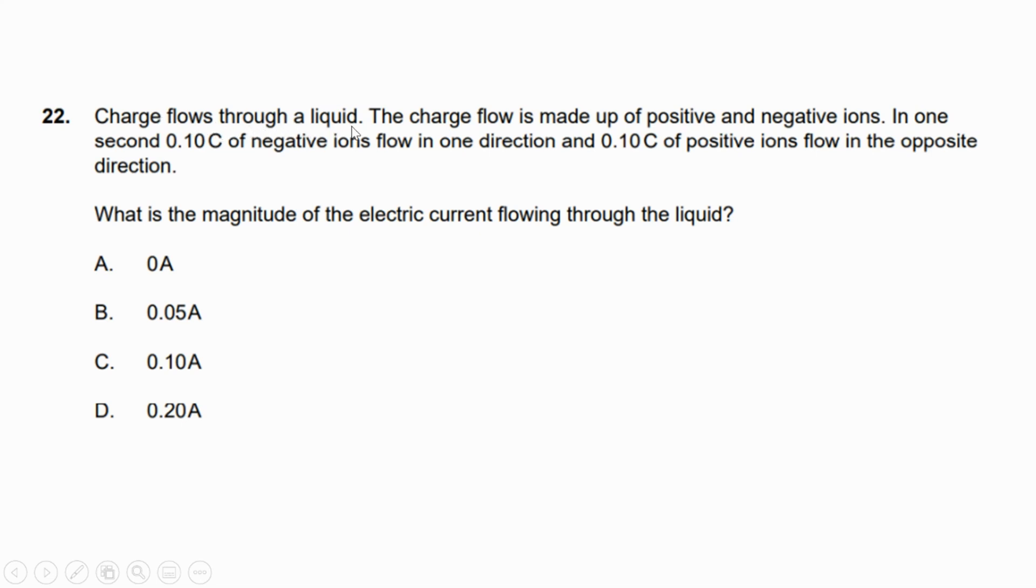Charge flows through a liquid. The charge flow is made up of positive and negative ions. In one second, 0.10 coulombs of negative ions flow in one direction and 0.10 coulombs of positive ions flow in the opposite direction. What is the magnitude of the electric current flowing through the liquid?